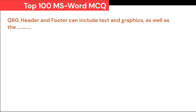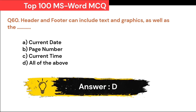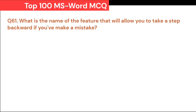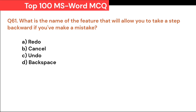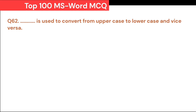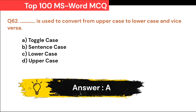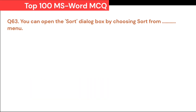Header and footer can include text and graphics as well as: A. Current date. B. Page number. C. Current time. D. All of the above. Correct answer is D. All of the above. What is the name of the feature that will allow you to take a step backward if you make a mistake? A. Redo. B. Cancel. C. Undo. D. Backspace. Correct answer is C. Undo. Dash is used to convert from uppercase to lowercase and vice versa: A. Toggle case. B. Sentence case. C. Lowercase. D. Uppercase. Correct answer is A. Toggle case.